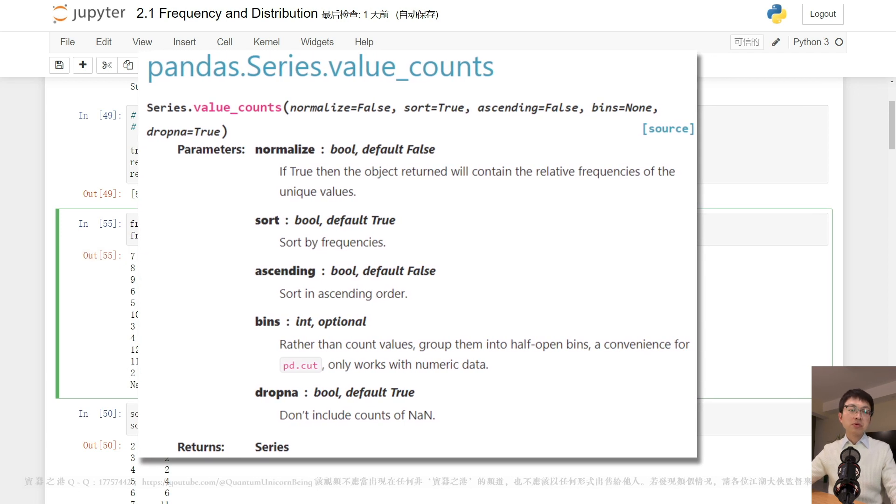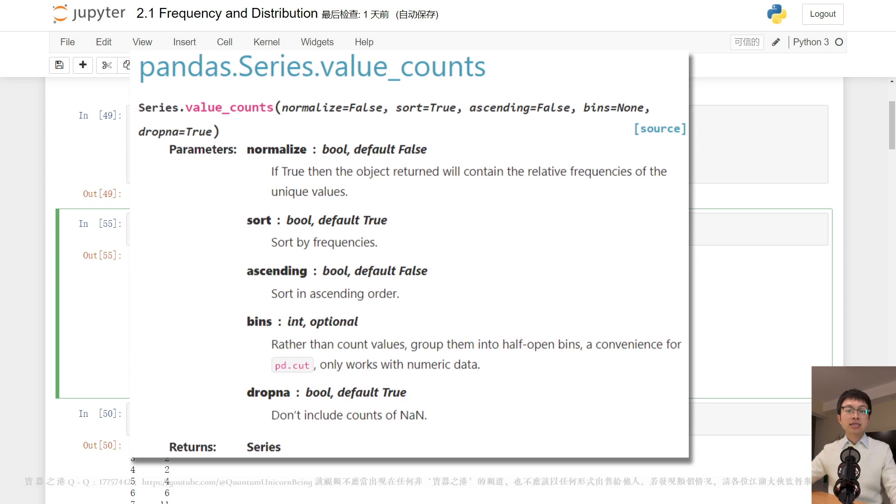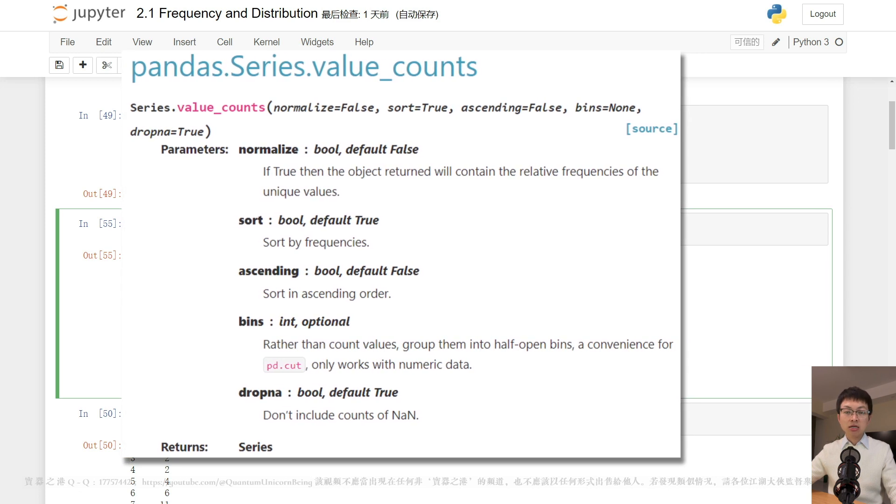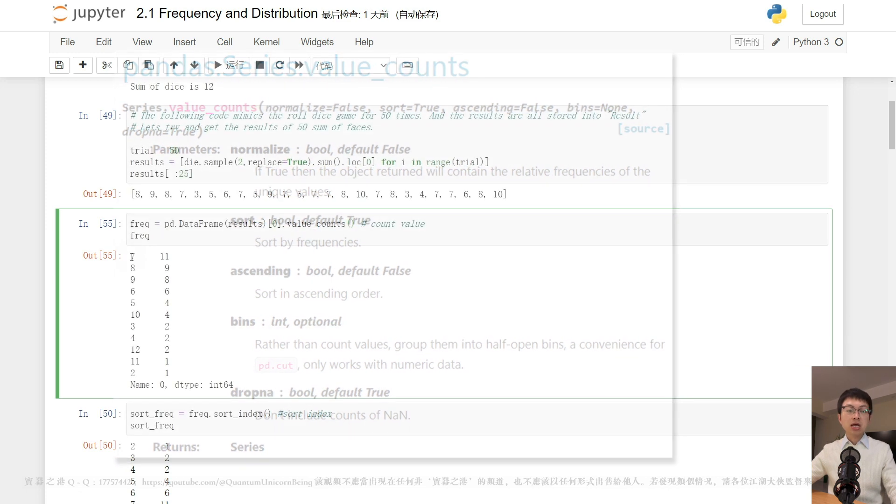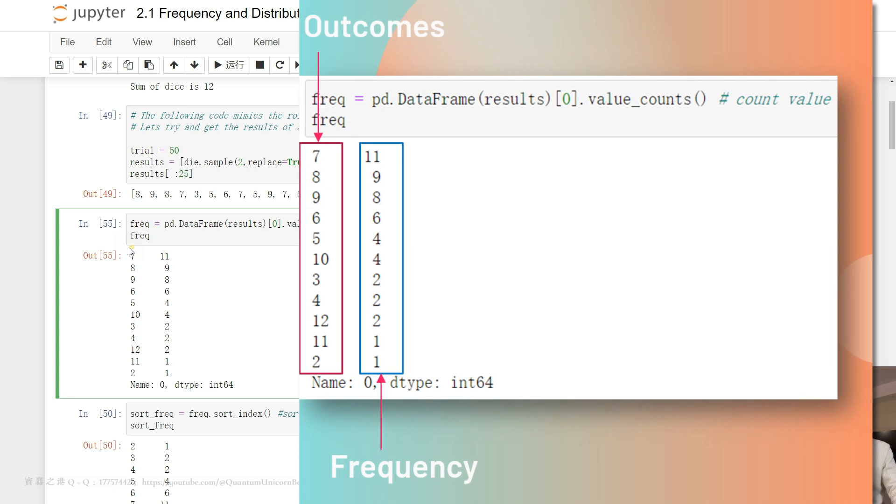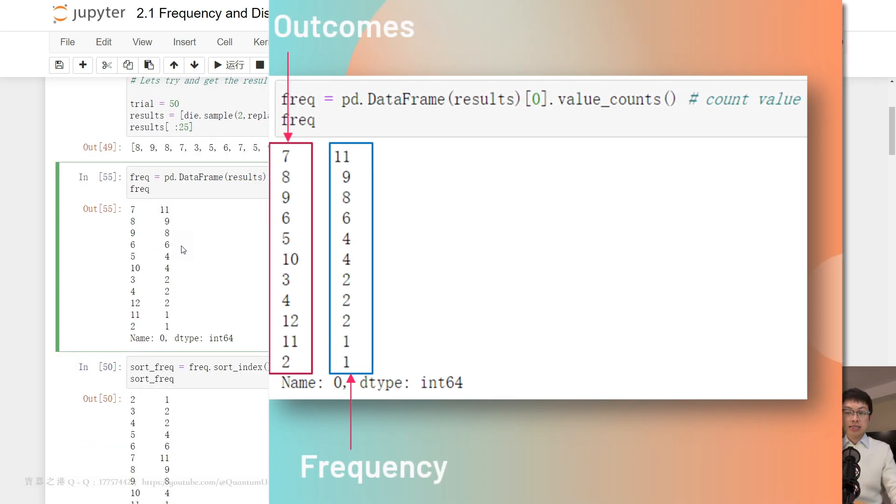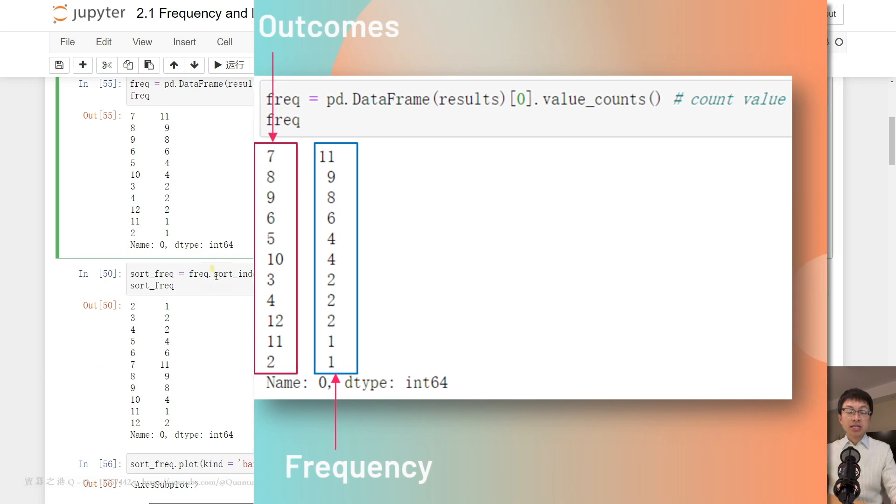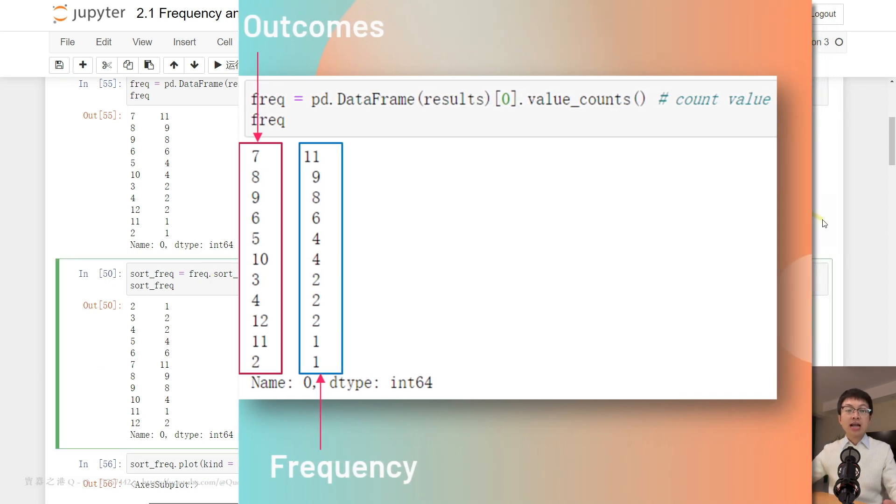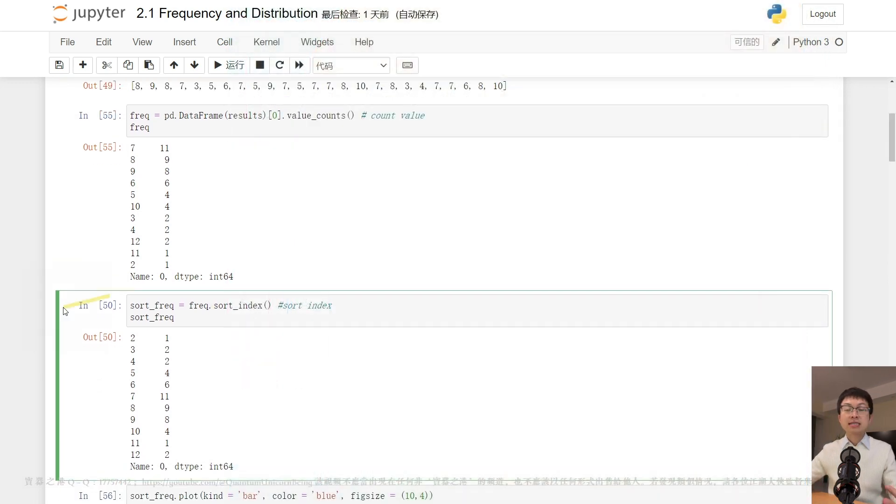Put simply, it returns a series containing counts of unique values. The resulting object will be in descending order so that the first element is the most frequently occurring element. So the index of the series is a list of different outcomes and the value column represents the frequency of each outcome.